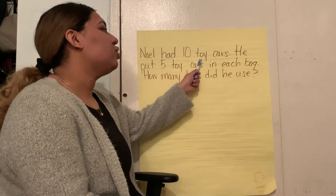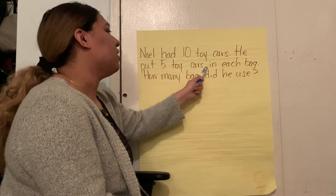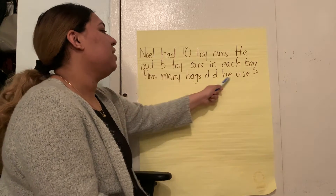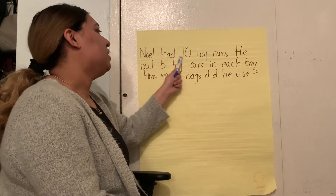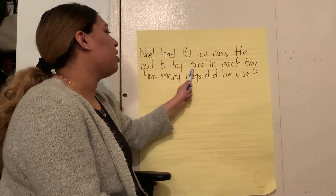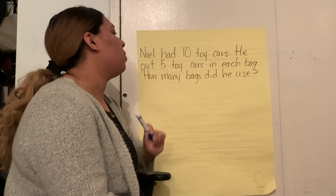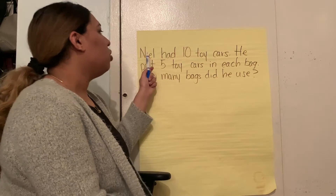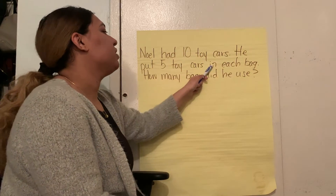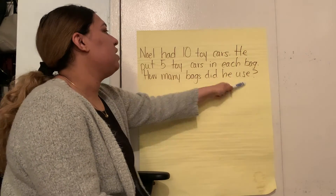Noel had 10 toy cars. He put 5 toy cars in each bag. How many bags did he use? Let's read it one more time: Noel had 10 toy cars. He put 5 toy cars in each bag. How many bags did he use?